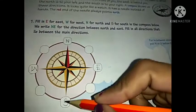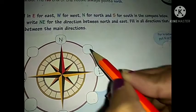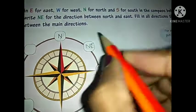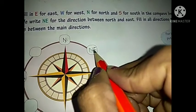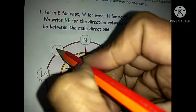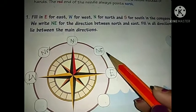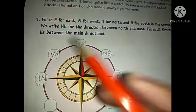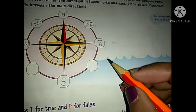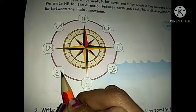But what about the directions that lie between the main directions? Between North and East, we have the North-East direction. Between North and West, we have the North-West direction. Coming towards South and East, that direction is called South-East. And between South and West, that is called the South-West direction. So don't get confused — this is how you read the compass with all eight directions.